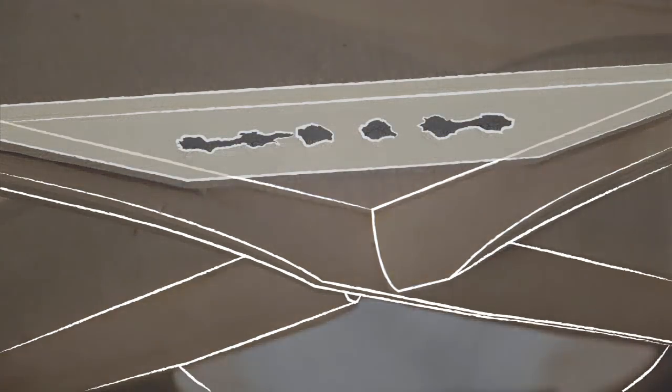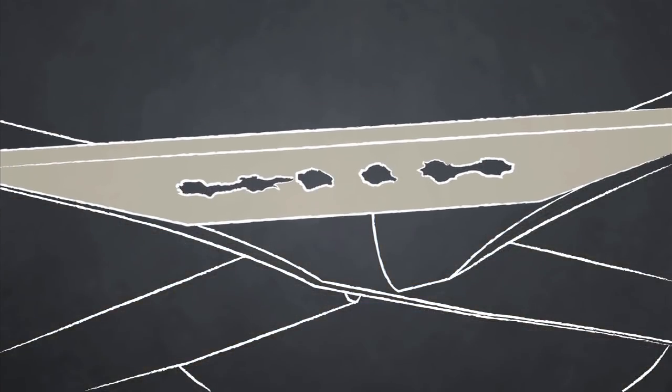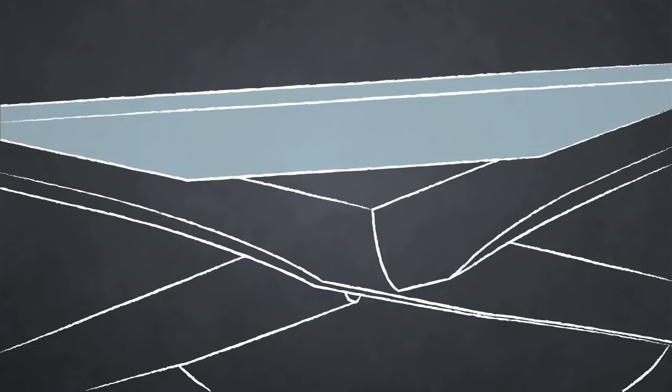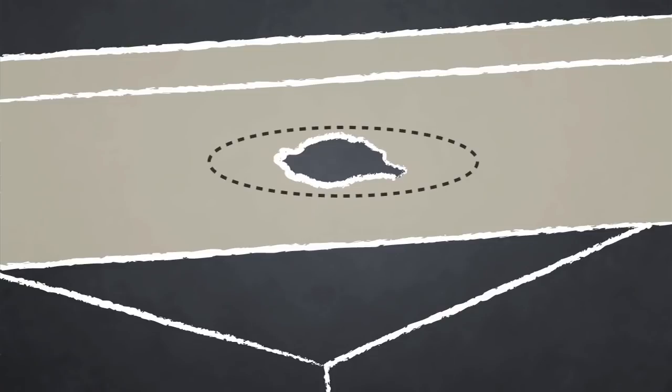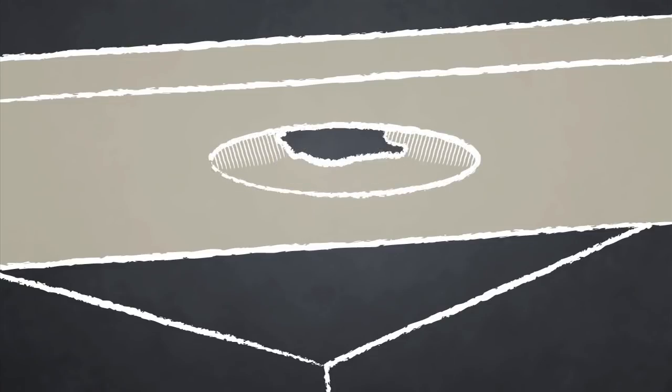Here's the idea. When the bridge pin holes become damaged, the only fix used to be removing and replacing the entire bridge plate. The Bridge Saver leaves the bridge plate intact, and with it you dish out a very small area around each damaged bridge pin hole.